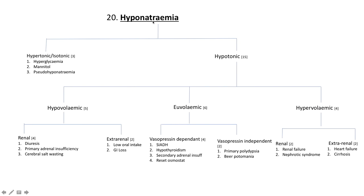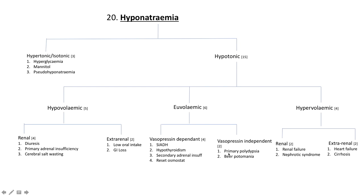If the situation is euvolemic hypotonic hyponatremia — the patient is clinically neither overloaded nor fluid-depleted — then you look at whether it's vasopressin-dependent or vasopressin-independent. If vasopressin-dependent: SIADH, which is all too common, where too much ADH causes the body to reabsorb too much water; also hypothyroidism, secondary adrenal insufficiency, and a reset osmostat. If vasopressin-independent euvolemic hypotonic hyponatremia: primary polydipsia or beer potomania.